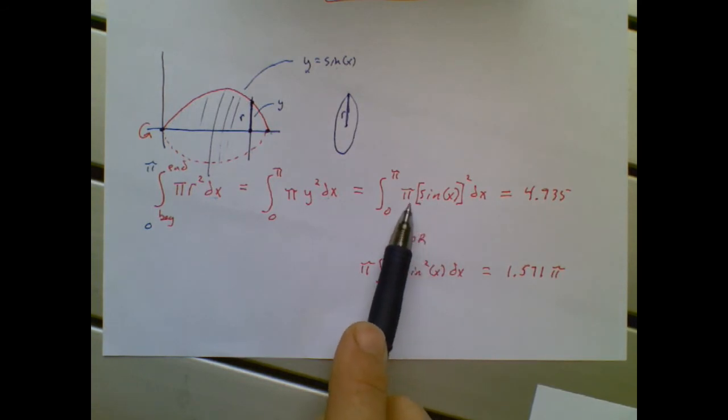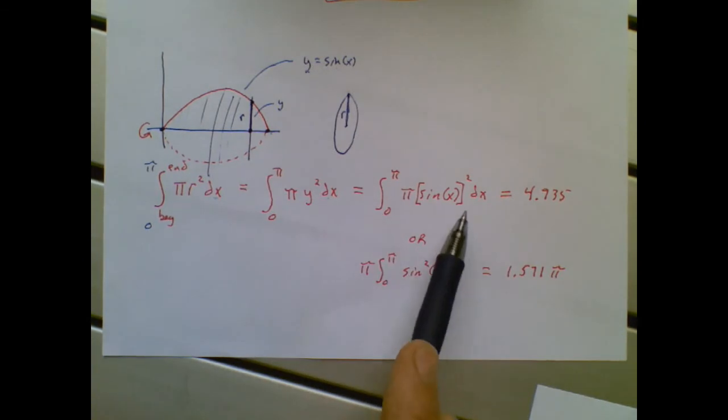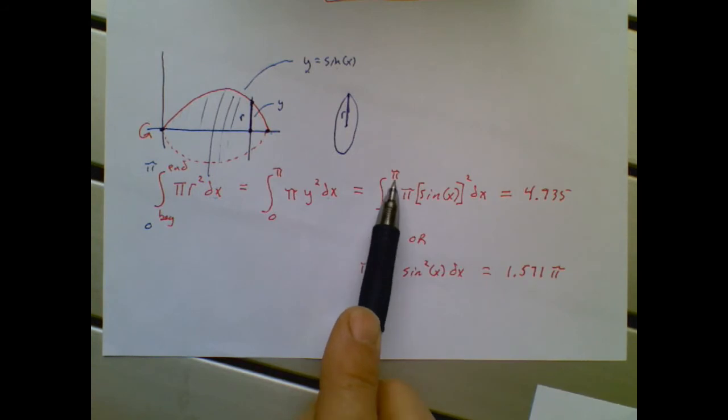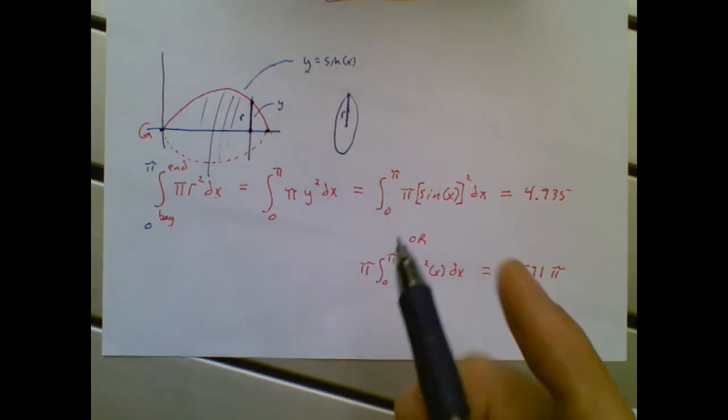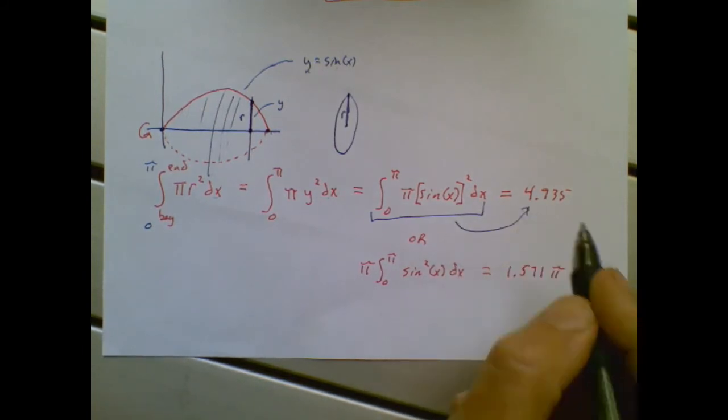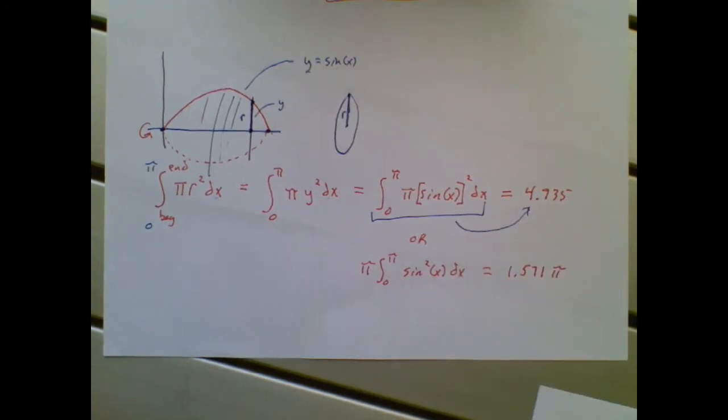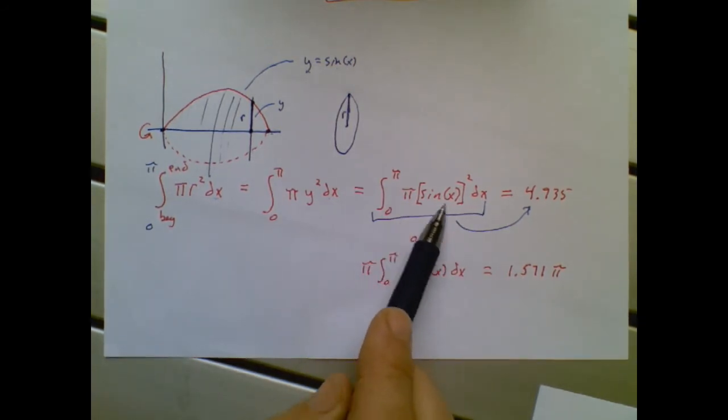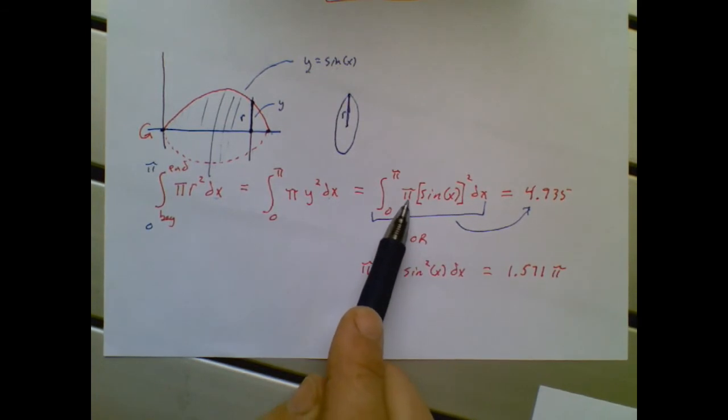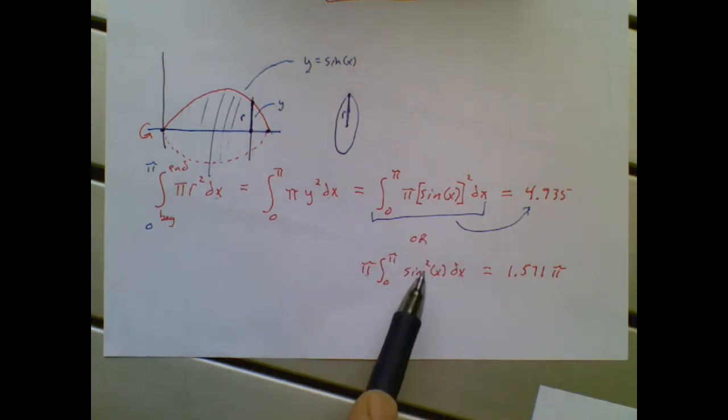So at this stage, I've got a full integral. It's with respect to x. I'm using the variable x. I'm beginning and ending along the x-axis. So I can just take this, plug this into my calculator, and I have it. By the way, just so you know, or remember, this integral can be rewritten. This is a constant coefficient, so I can put it out in front.